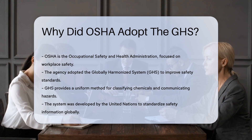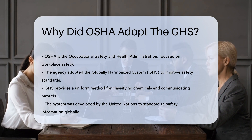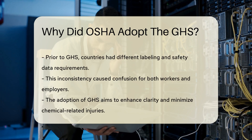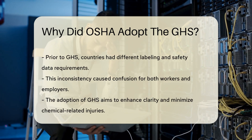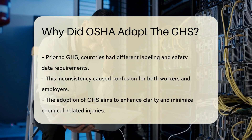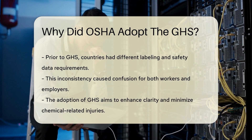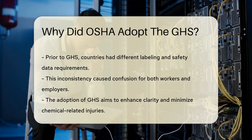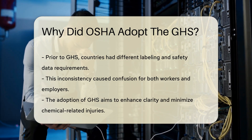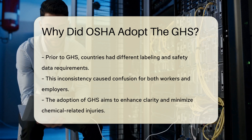GHS provides a consistent approach for classifying chemicals and communicating hazards. This system was developed by the United Nations to unify safety information worldwide. Before GHS, different countries had varying labeling and safety data requirements, and this inconsistency led to confusion among workers and employers. By adopting GHS, OSHA aims to improve clarity and reduce the risk of chemical-related injuries.